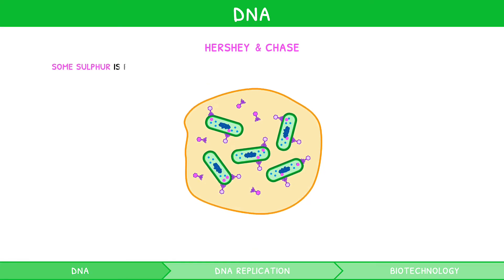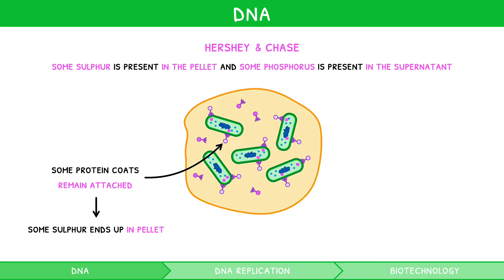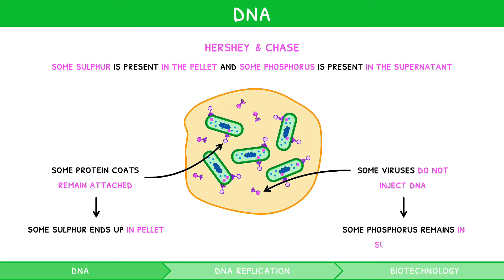But why is some sulfur present in the pellet, and some phosphorus present in the supernatant? Agitation of the solution shakes off many of the protein coats into the supernatant, but some may remain attached to bacteria and end up in the pellet. Additionally, some viruses may not inject their DNA into the bacteria, meaning that some phosphorus never enters the bacteria and remains in the supernatant. So you now know the evidence for DNA's function alongside the evidence for its structure.